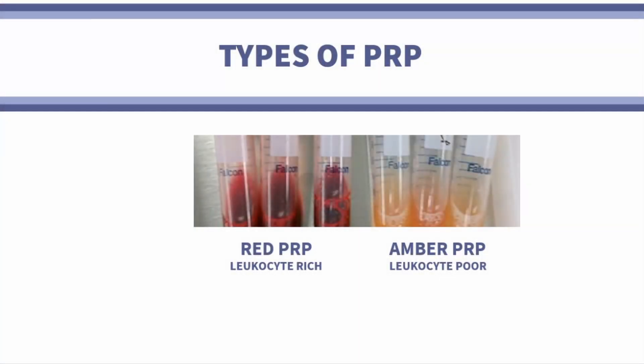The basic breakdown is a simplistic component called red PRP versus amber PRP. Red PRP is typically comprised of some degree of leukocytes, which are white blood cells, as well as some components of red blood cells. Amber PRP is typically leukocyte-poor, meaning it lacks white blood cells and also lacks red blood cells.